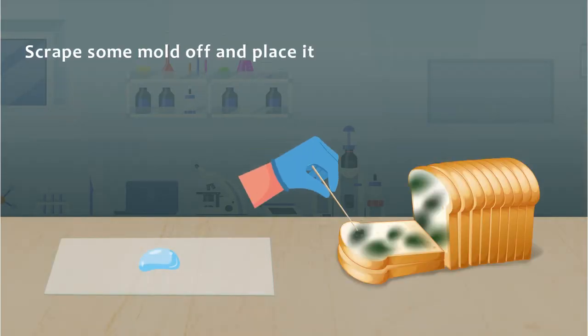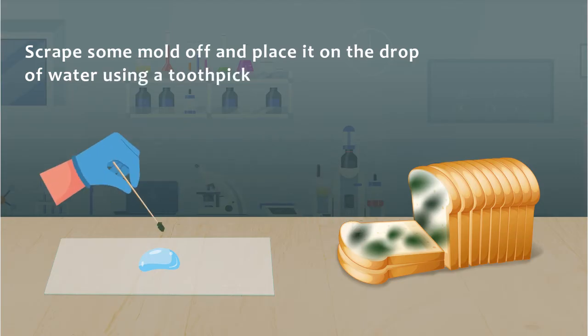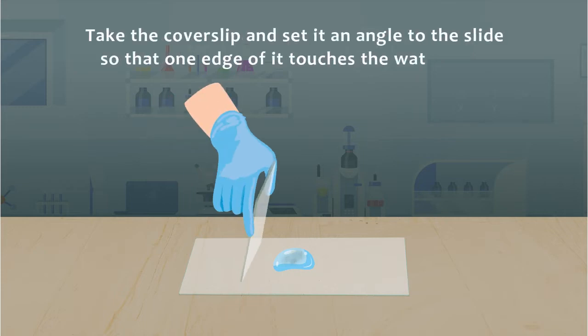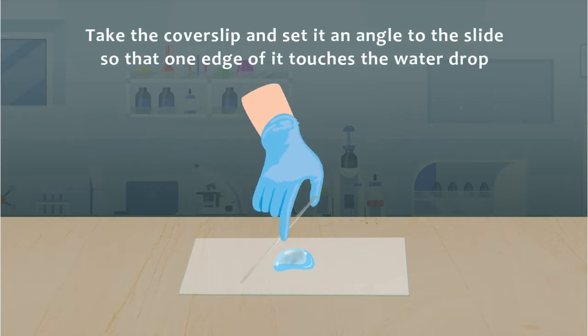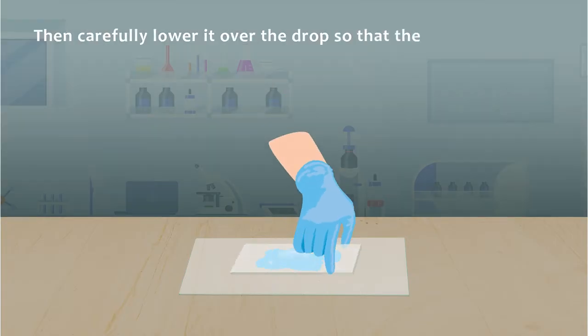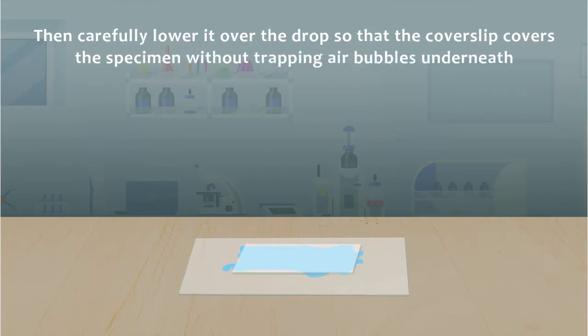Scrape some mold off and place it on the drop of water using a toothpick. Take the coverslip and set it at an angle to the slide so that one edge of it touches the water drop. Then carefully lower it over the drop so that the coverslip covers the specimen without trapping air bubbles underneath.